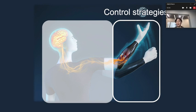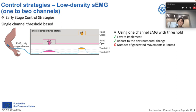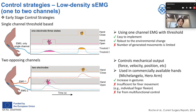Then we will move on to the control strategies, starting from the low-density EMG paradigm. This figure represents early-stage control strategies, which use only one EMG channel with a threshold to control different gestures — very easy to use and robust, but the number of gestures it can produce is limited. The next paradigm uses two EMG channels, where the agonist muscle represents one gesture and the antagonist muscle represents another. This is better than a single channel but still far from multifunctional control.